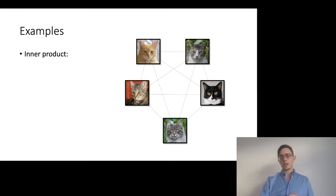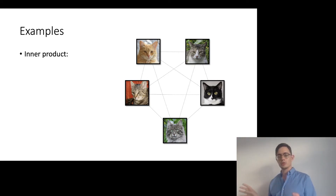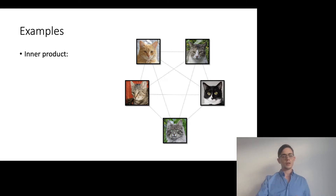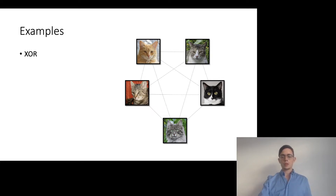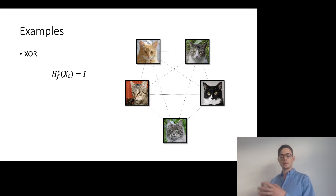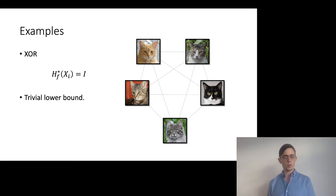Some examples: for the inner product, if we fix the input of one party, we can divide up the remaining 2t parties into two groups, and all information in each group matters for the expansion, so the functional entropy of x_i is t·i. This re-establishes the lower bound of Damgaard, Larsen and Nielsen, which they show is also tight up to constant factors. On the other extreme, for XOR there are many inputs that lead to the same expansion, meaning the entropy in the expansion is only the size of the input of a single party, giving a trivial lower bound — unsurprising since XOR is a linear function.